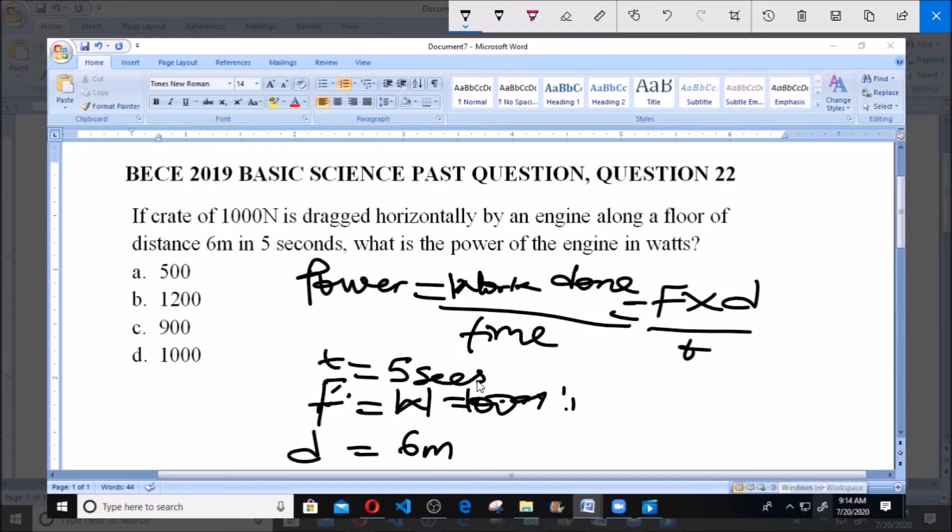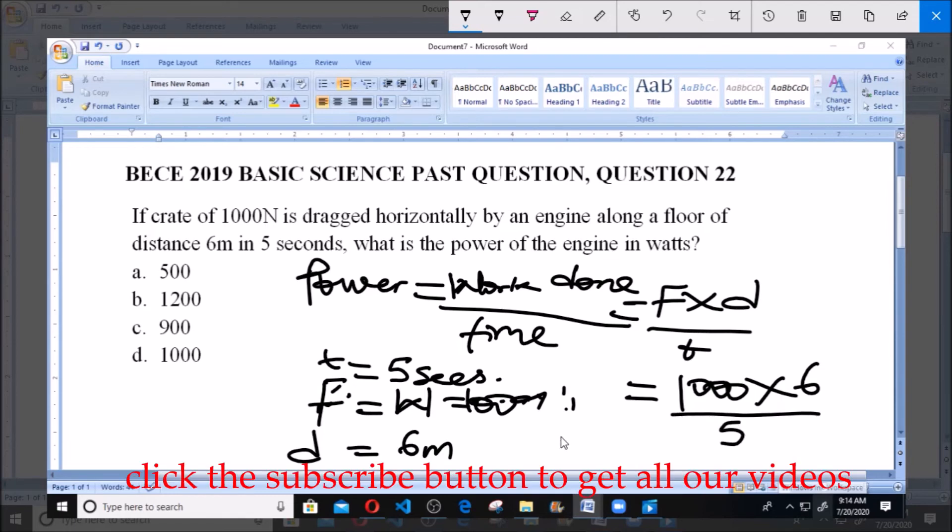So therefore, our power will be equals to force, which is 1000, multiplied by distance 6, all over time taken, which is 5. So from here we're going to have 6000 over 5, and this is equals to 1200 watts.